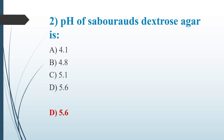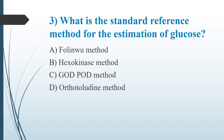Third question: What is the standard reference method for the estimation of glucose? Option A: Folin-Wu method. Option B: Hexokinase method. Option C: GOD-POD method. Option D: Orthotoluidine method. The answer is the hexokinase method — it's a regular question for all exams.